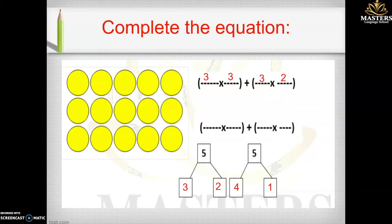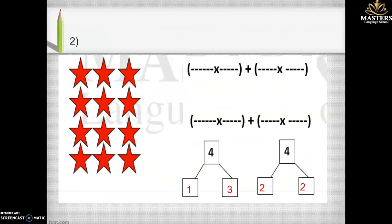Someone else might say they want to break five into four and one instead. Yes, four plus one equals five. So here, I'm going to multiply three, which is the rows, by the first addend, which is four, plus the rows again — three — times the second addend, which is one. So three times four plus three times one.